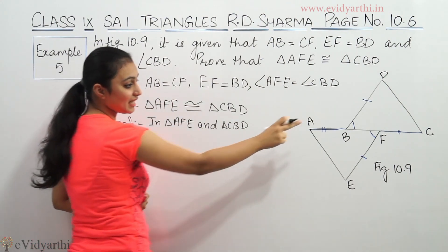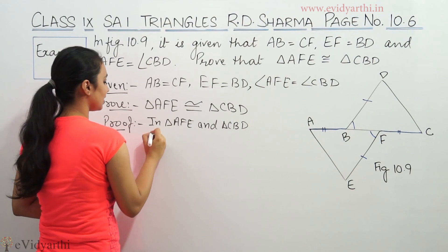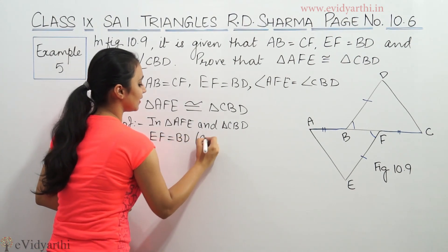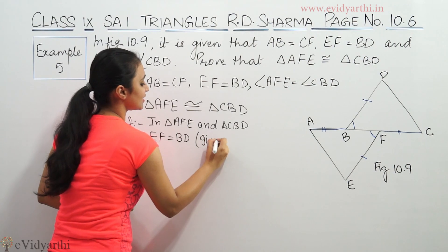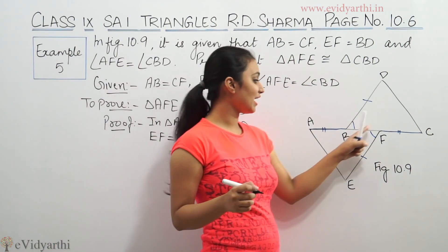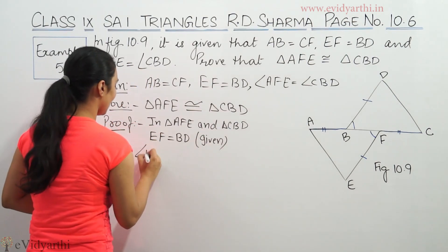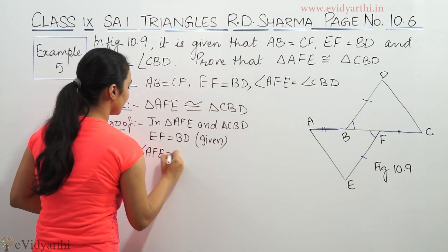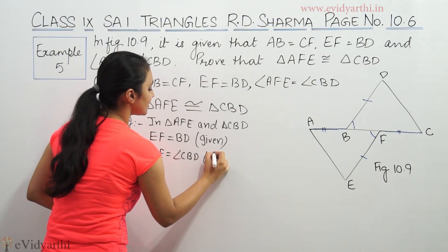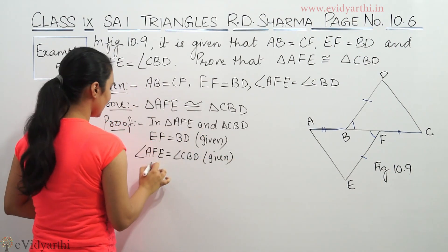Proof: Given that AB is equal to CF. EF is equal to BD — this is given. Then we have angle AFE equal to angle CBD — this is given. And AB is equal to CF.